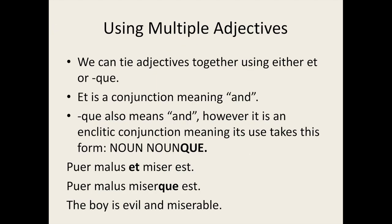In Latin, we can also employ a conjunction, just like we do in English, to string together multiple adjectives. In English, we typically use the conjunction 'and.' There are two ways we can express 'and' in Latin: we can either use the word et, or the enclitic conjunction -que, which is stuck to the end of the word. So we have puer malus et miser est, and puer malus miserque est. These are two ways of saying the exact same thing: the boy is evil and miserable.